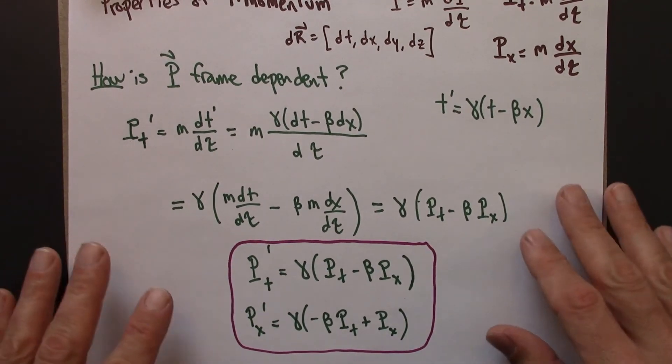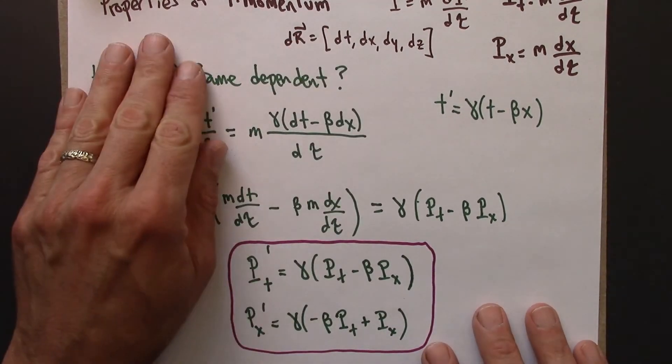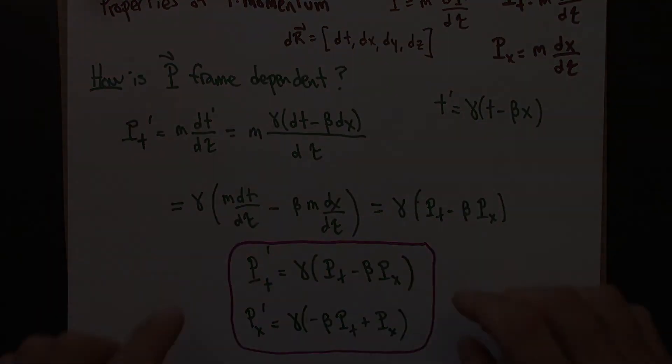Okay, so the moral of the story and the first property of the four momentum to highlight is that it transforms just like the x and t do according to the Lorentz transformations. So that's one property. In the next video, we'll look at another property of four momentum, and we'll find an invariant, kind of like the space-time interval.